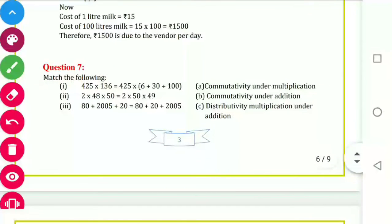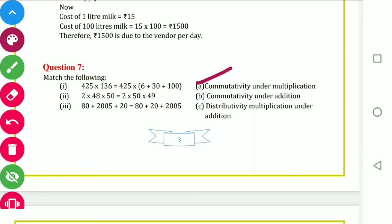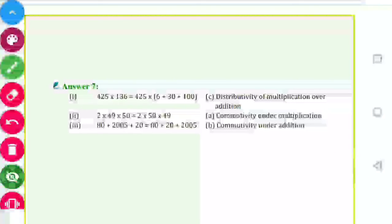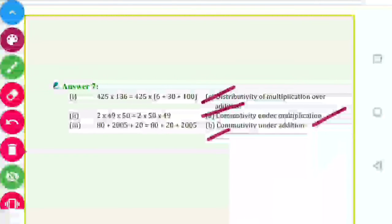Question number 7: you have to identify the property used. First: 425 into 136 — this is distributive property. Second: 2 into 48 into 50 and 2 into 50 into 49 — this is commutative property under multiplication. Third: 80 plus 205 plus 20 and 80 plus 20 plus 205 — this is commutative property under addition.